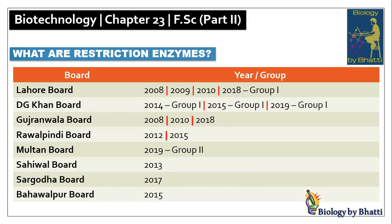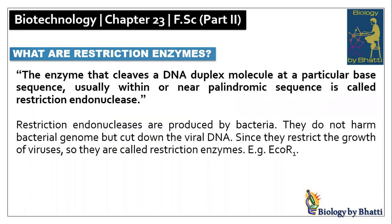Short question number two: What are restriction enzymes? Past paper references: Lahore board 2008, 2009, 2010, 2018 group 1; DJ Khan board 2014 group 1, 2015 group 1, and 2019 group 1; Gujranwala board 2008, 2010, 2018; Rawalpindi board 2012 group 1; Sahiwal board 2013; Sargoda board 2017; Bahawalpur board 2015. Restriction endonucleases or restriction enzymes are enzymes that can cut a double helical DNA molecule at a particular sequence.